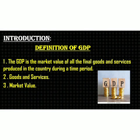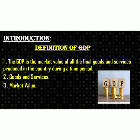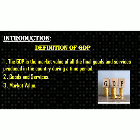Gross Domestic Product is the market value of all the final goods and services produced in the country during a period of time. Goods are tangible items while services are activities which are intangible. Tangible means you can feel and touch, whereas intangible you could not. Market value is the price at which goods and services are sold in the market.